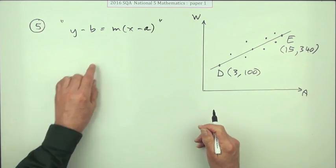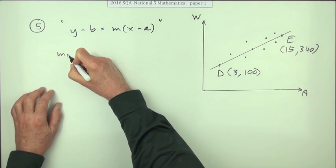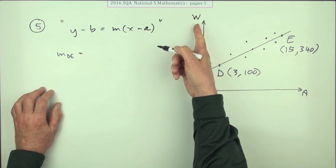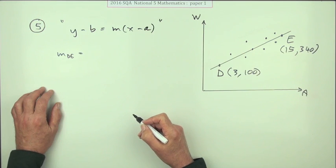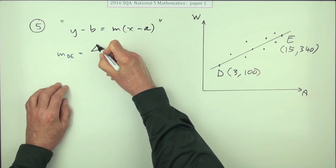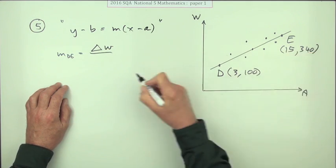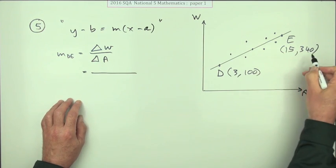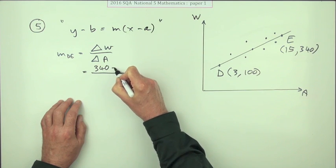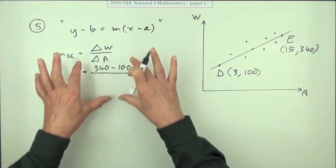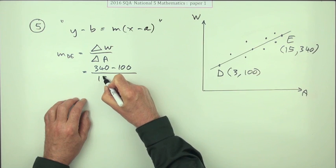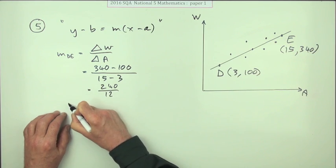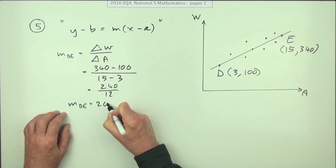Before using that form, we need to work out the gradient. The gradient of DE uses the difference in w values over the difference in a values — so it's Δw over Δa. That gives us 340 take away 100 over 15 take away 3, which is 240 over 12. That's very nice because it goes in exactly 20 times, giving a gradient of 20.